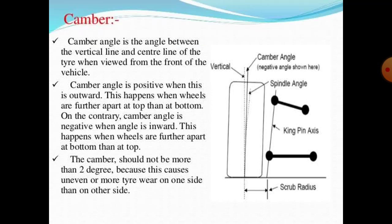Camber angle is positive when the wheel is tilted outward. This happens when wheels are further apart at the bottom than at the top. The camber should not be more than 2 degrees, because excessive camber causes uneven or more tire wear on one side than the other.